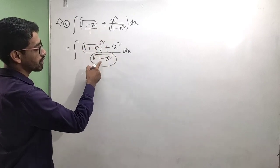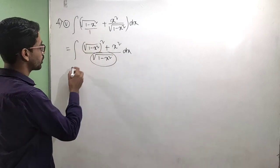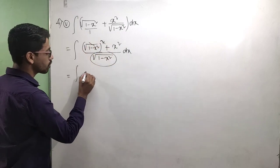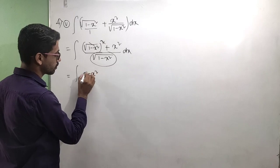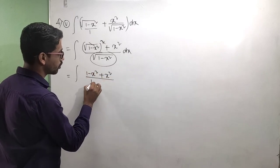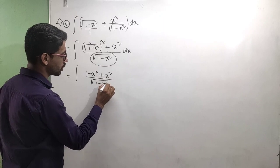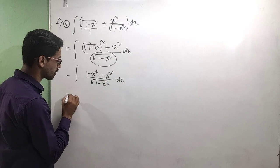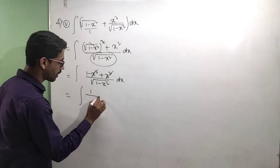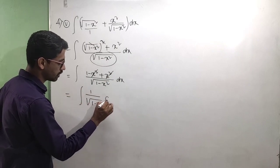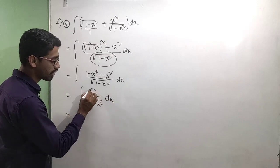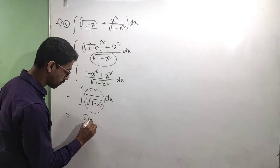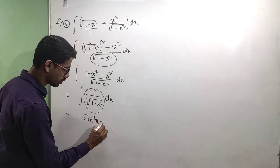We have the integral of root of one minus x square. After the square root cancels, we get one minus x square plus x square by root over of one minus x square dx. Next, one of the four minus x square plus x square cancels, giving one by root over of one minus x square dx. The formula: integration of one by root over of one minus x square dx equals sine inverse x plus C.